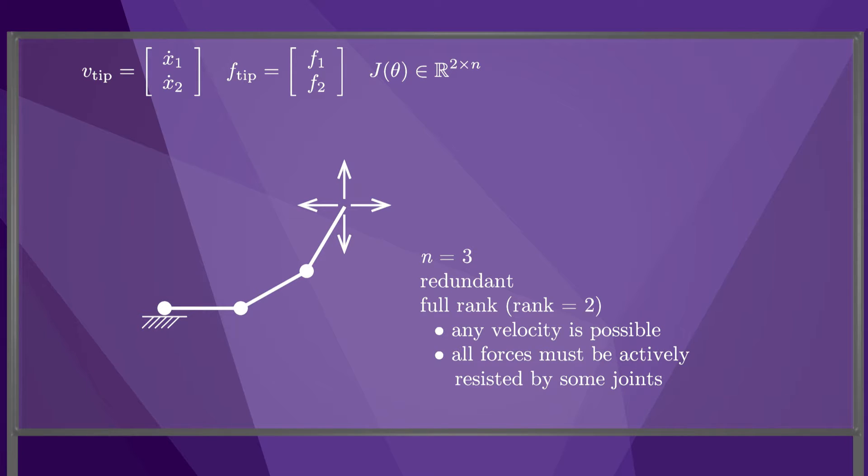The robot is redundant, and its 2 by 3 Jacobian matrix is full rank, meaning its rank is 2 at the configuration shown. Since Jacobian is rank 2, the robot can generate any linear velocity at its end-effector, and any force applied to the end-effector must be actively resisted by at least one of the joints.